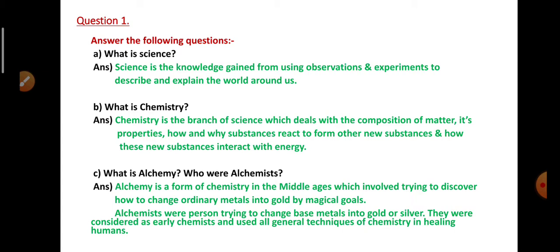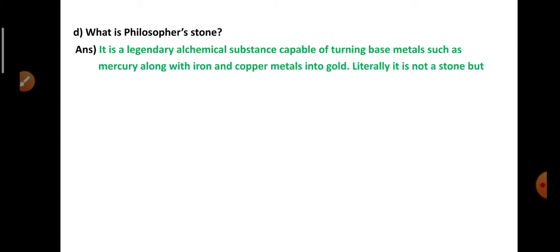Next, what is Philosopher's Stone? It is a legendary alchemical substance capable of turning base metals such as mercury, along with iron and copper metals, into gold. Literally it is not a stone but wax, liquid, or powder with magical power.